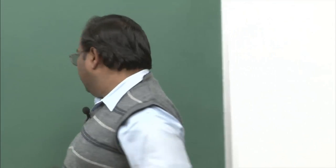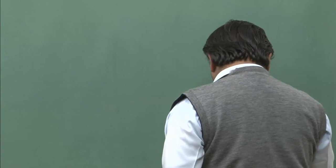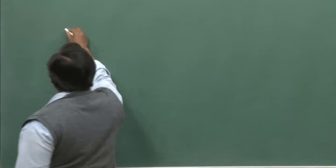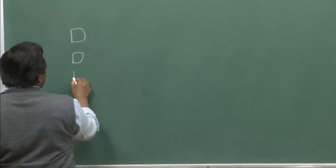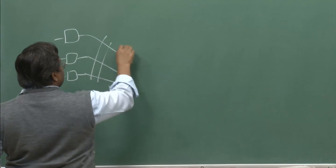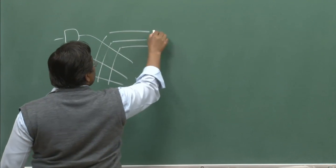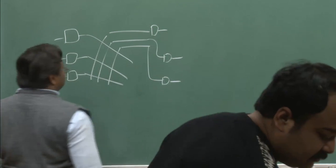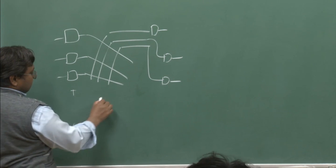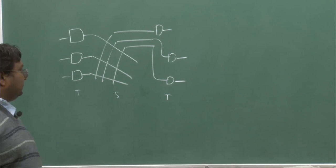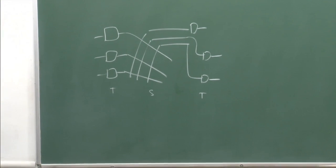A quick recap of what we were doing last time. We are looking at a time-space-time (TST) configuration. This is the configuration: first was a time stage, space, and time. This is a time multiplex space switch, and we are looking at how this will be controlled by an exchange control system.